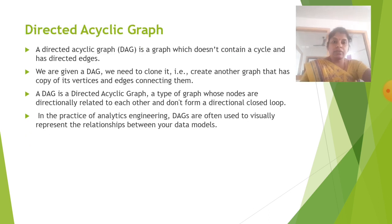Then directed acyclic graph. A directed acyclic graph DAG is a graph which does not contain a cycle and has directed edges. We are given a DAG, we need to clone it. That is, create another graph that has a copy of its vertices and edges connecting them.